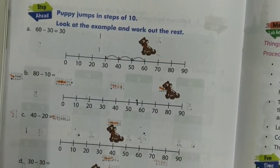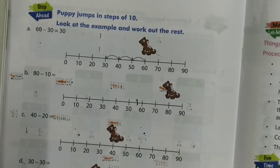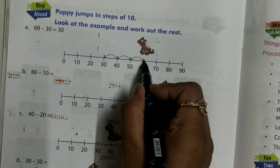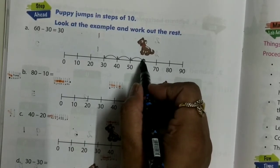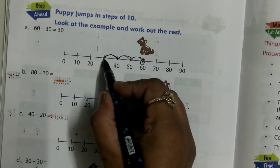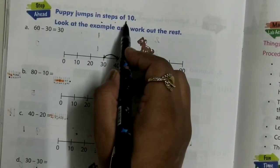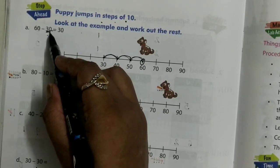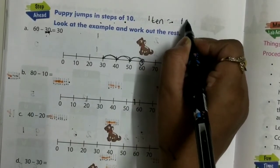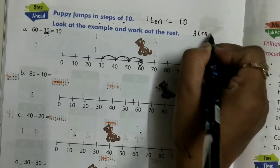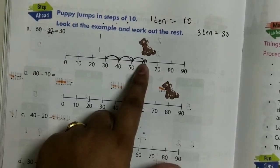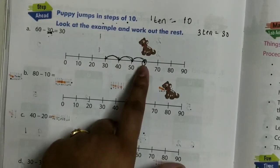60 minus 30 — 1 step equals 10. So 30 means how many 10s? 3 tens. So you have to move backwards by 3 steps: 1, 2, 3. So 60 minus 30 means move back 3 steps from 60.